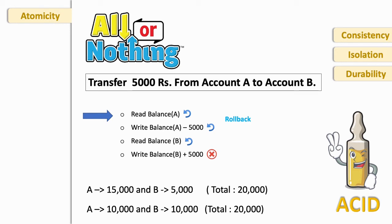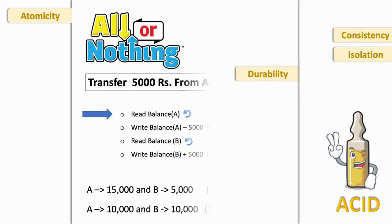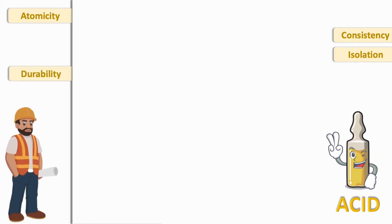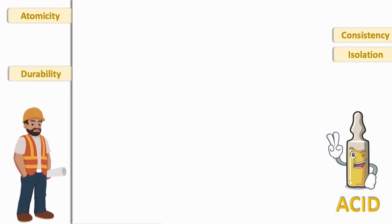So we will roll back the transaction where it was at the beginning. Now A has its five thousand back, total of both accounts is twenty thousand, and we are good to go. Now you know what is atomicity. Atomicity and durability are like recovery managers.